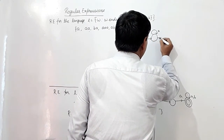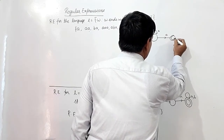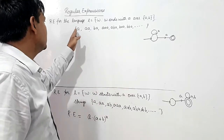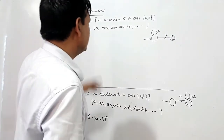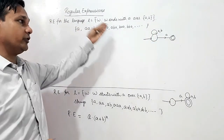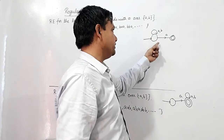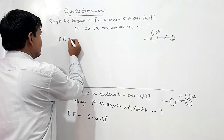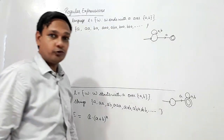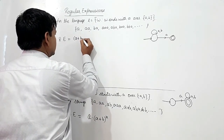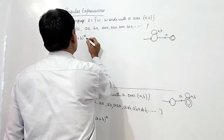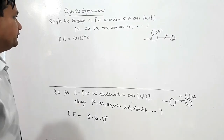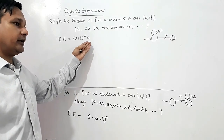Drawing the NFA: a string may start with either 'a' or 'b', but it will be accepted only if the last symbol is 'a'. So the regular expression is: (a union b) closure, concatenated with 'a' at the end — written as (a+b)*a. This is the regular expression for the language in which all strings end with 'a'.